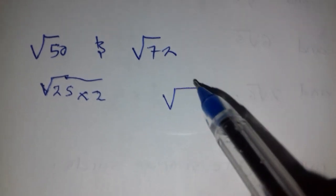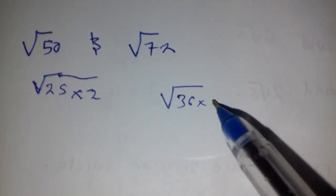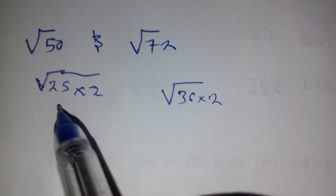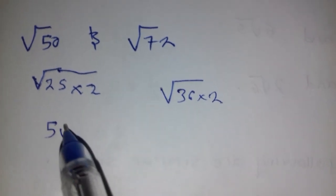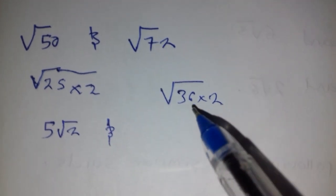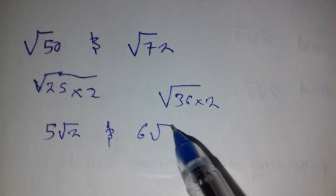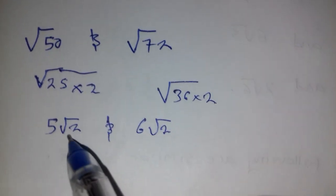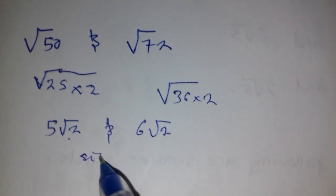And any perfect square that can go there, 36. How many times? 2. What is the square root of 25? We have 5. What remains inside? 2. What is the square root of 36? We have 6. What remains inside? 2. So the radicand is the same, therefore they are similar.